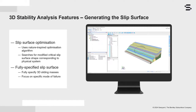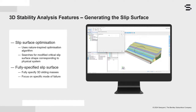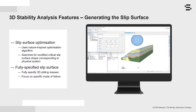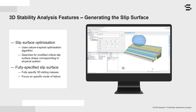Sliding masses may now be defined using the fully specified method. The ability to fully specify three-dimensional slip surfaces provides an efficient workflow to focus attention on a specific mode of failure or improve one's understanding of Slope3D.